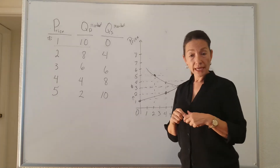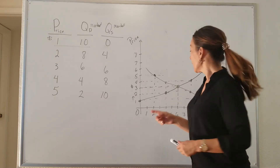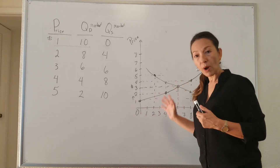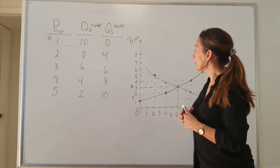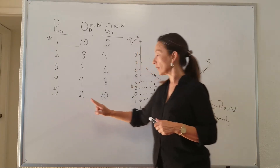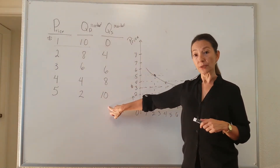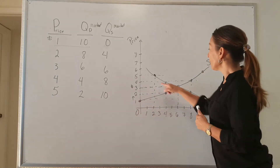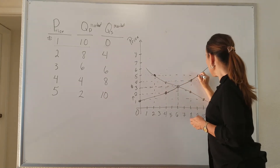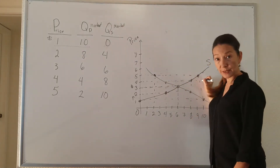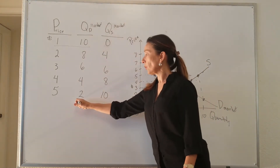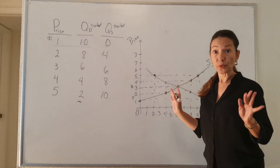In a competitive market with many buyers and sellers, prices will always converge towards equilibrium. For example, let's say sellers really like the $5 price. At $5, they're willing to put 10 ice cream cones out into the market. But at a price of $5, they're only going to sell two, because people say that is way too much.